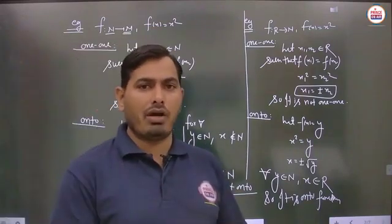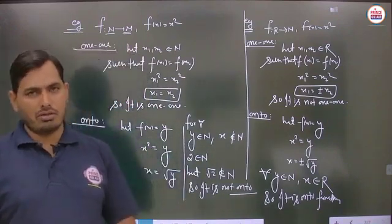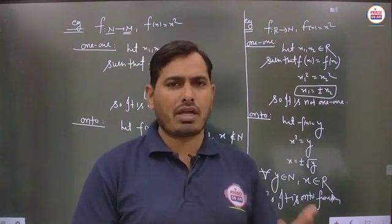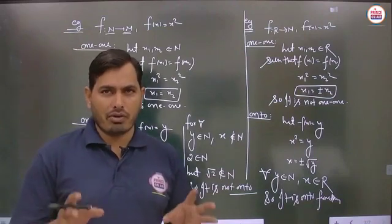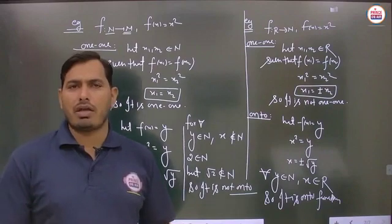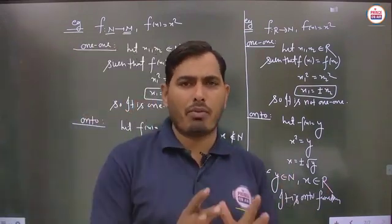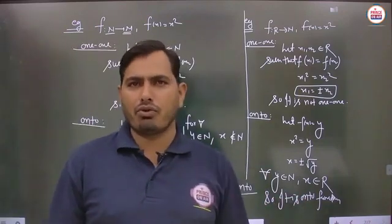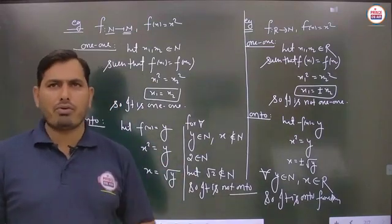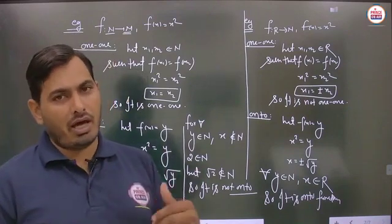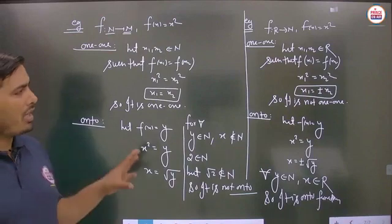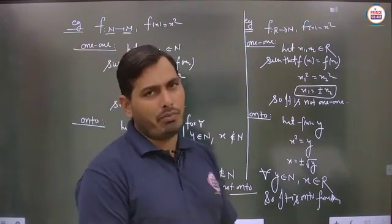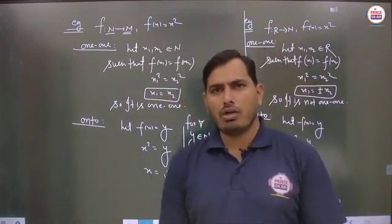If any function is both one-one and onto, then it is said to be a bijective function. In the next video, we will start Exercise 1.2 where we will solve various questions using the testing process of one-one and onto functions with graphical and theoretical approaches. Thank you, students.